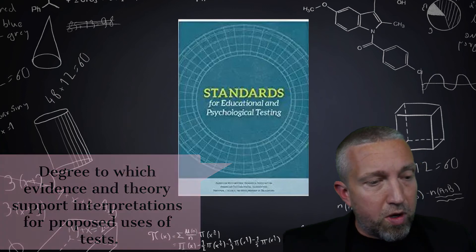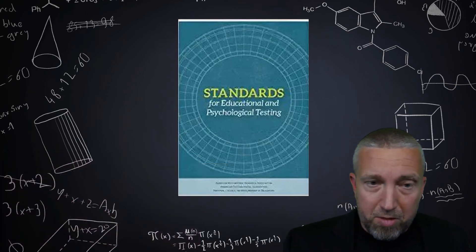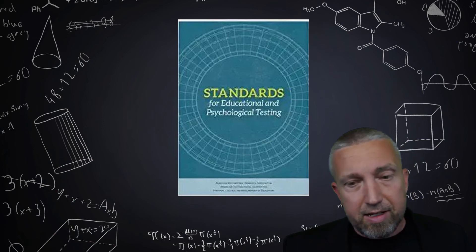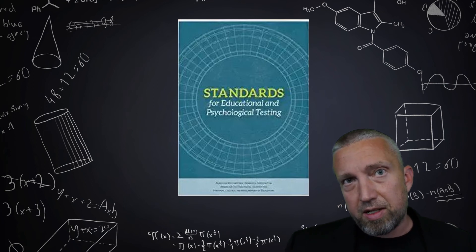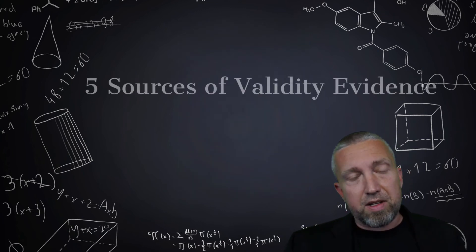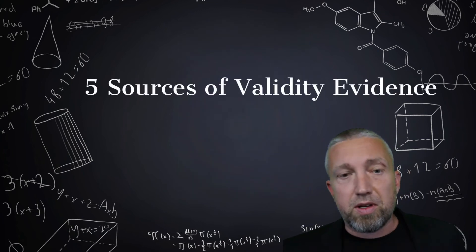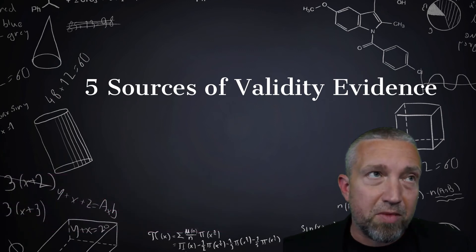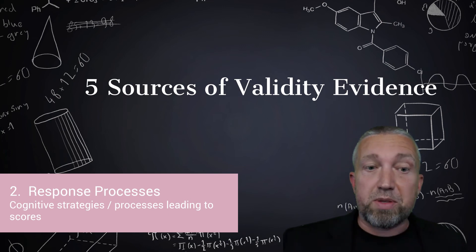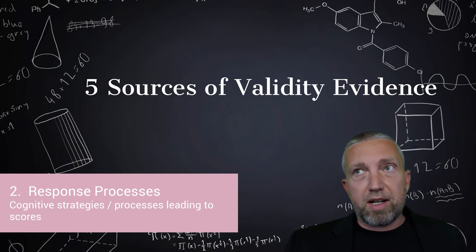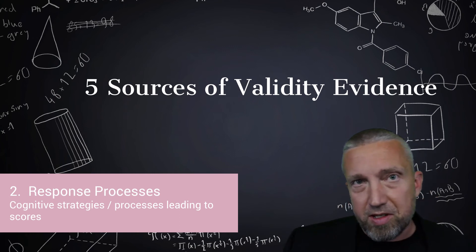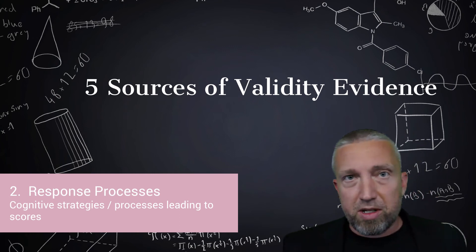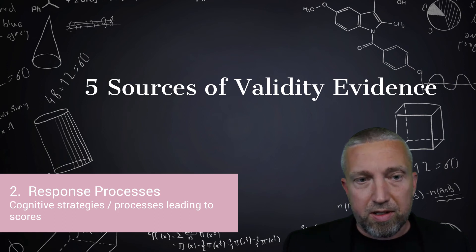Validity is this unified concept, and instead of talking about different types of validity, the standards talk about these different sources of validity evidence. The first source of validity evidence pertains to test content, which I've already talked about. The second source pertains to response processes. What kinds of cognitive processes might a person use when they're responding to a question on a test of some kind?